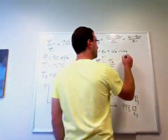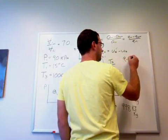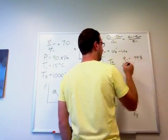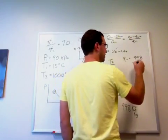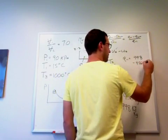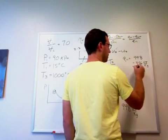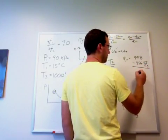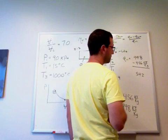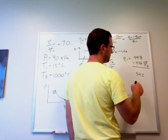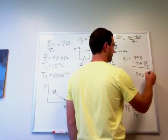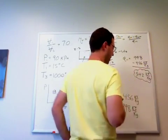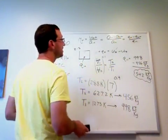We've got Q_in. 998 minus 456. That's going to be 542. So now let's get...